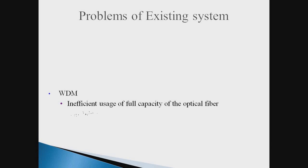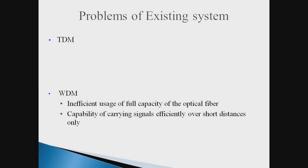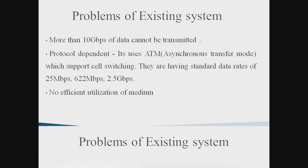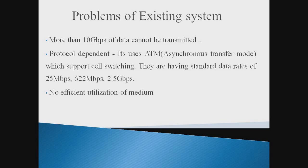WDM is efficient, uses the full capacity of optical fiber, and is capable of carrying signals efficiently over short distances. The various problems in the existing system included no utilization of the medium — for example, the bandwidth of the medium was not efficiently utilized. The previous system was protocol dependent, using the ATM protocol, which supports data rates of 25 Mbps, 622 Mbps, 2.5 Gbps and more.